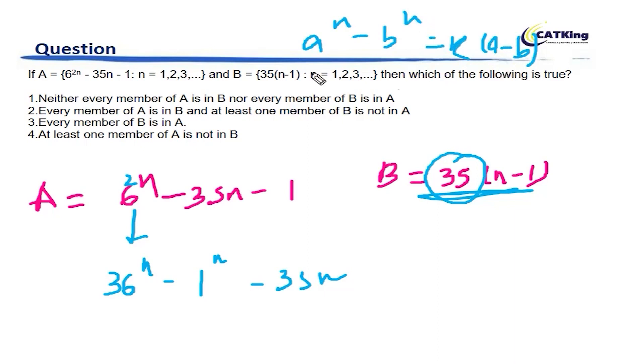A to the power n minus B to the power n is always divisible by A minus B. You can have any example - A square minus B square, A cube minus B cube, any number you want to take. So what we have here - A cube minus B cube or A square minus B square, whatever example you take - we can say this number is certainly a multiple of 35.